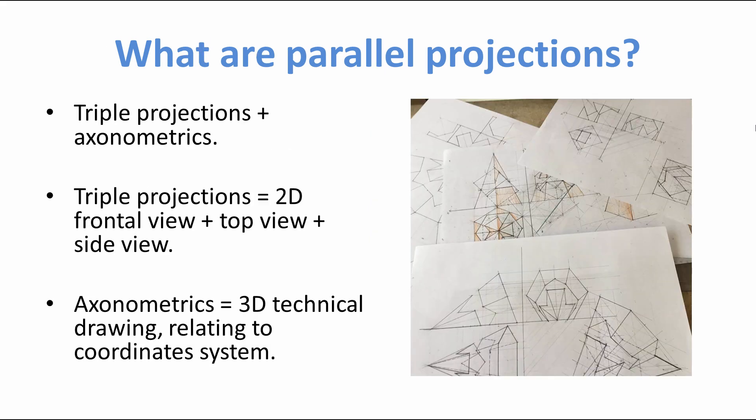So what are parallel projections? We don't have perspective points here — parallel lines stay parallel. It's a type of drawing that doesn't exist in real life. There are two categories: triple projections and axonometrics.